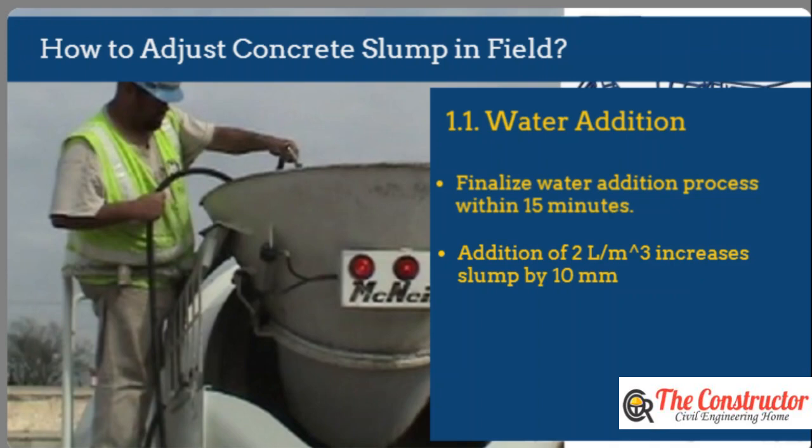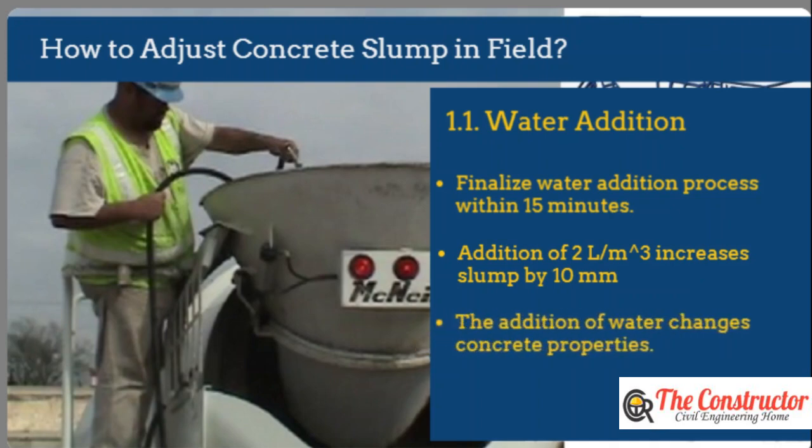However, this is influenced by other conditions such as temperature and air content. The addition of water changes the concrete properties. For instance, introducing nearly 3.8 liters of water leads to the increase of concrete slump by 2.54 centimeters, reduction of concrete strength by 1 to 1.38 megapascals, waste of a quarter of a cement bag, and increased shrinkage by 10%.